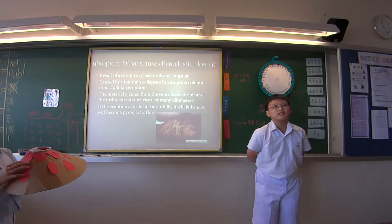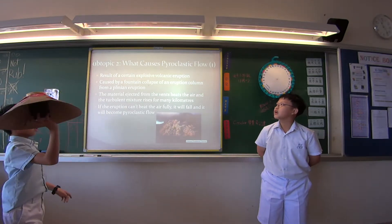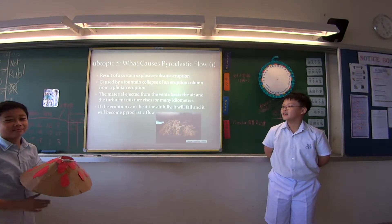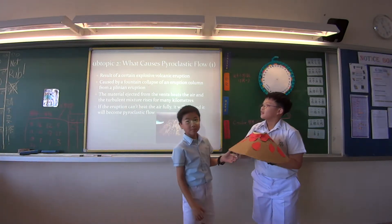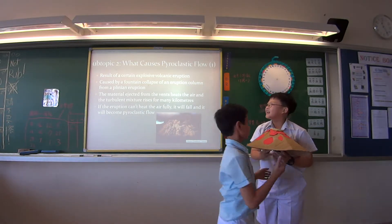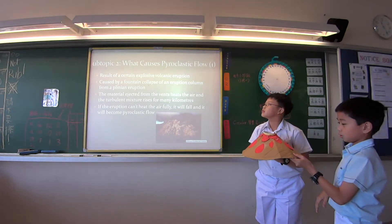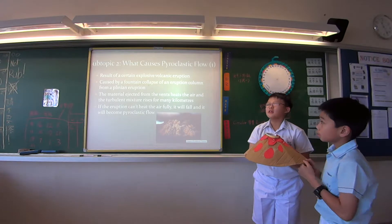I will tell you what causes Pyroclastic Flow. It is a result of a certain explosive volcanic eruption. It is caused by a fountain collapse of an eruption column from a plinian eruption.